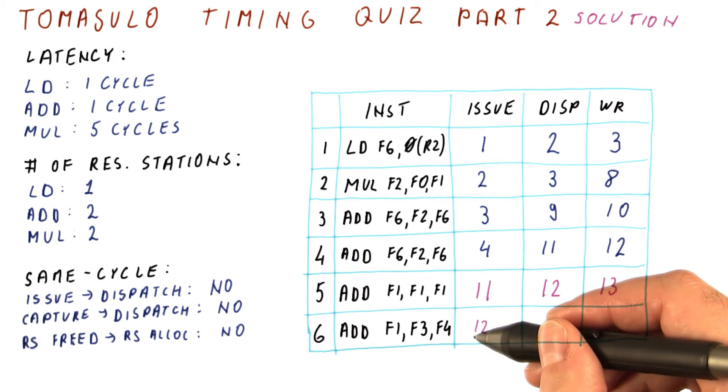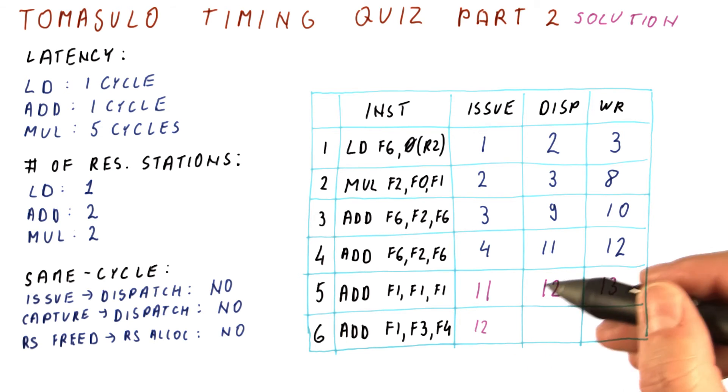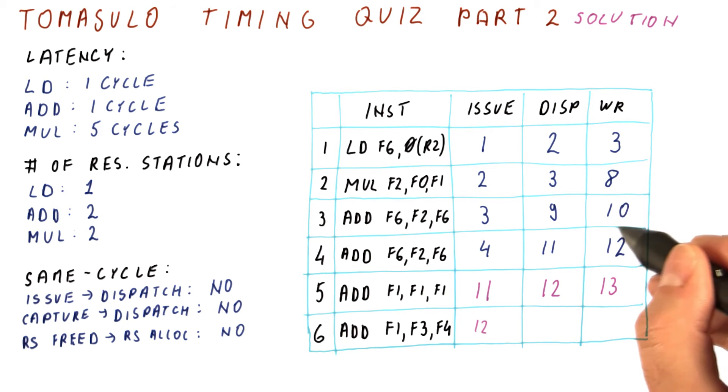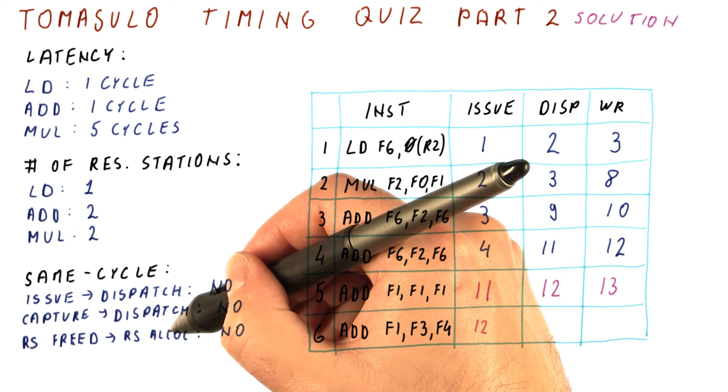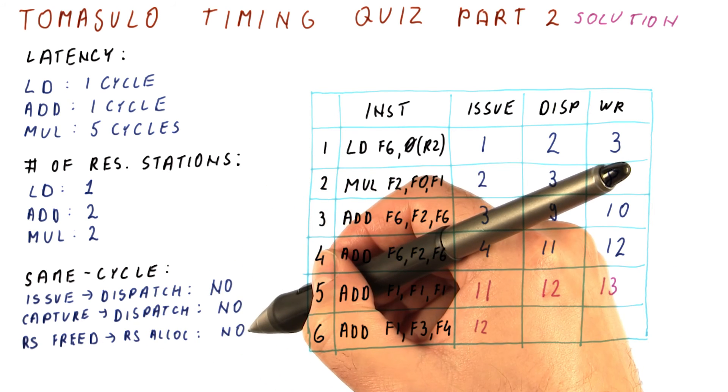But we have to check whether a reservation station is available. This ADD by then has freed the reservation station, but these two are still holding on to theirs. Note that this ADD here is freeing its reservation station in cycle 12, but it cannot be allocated to a new instruction in the same cycle.